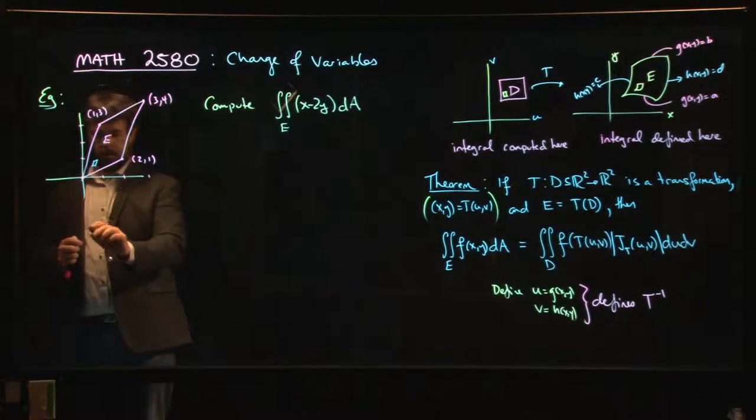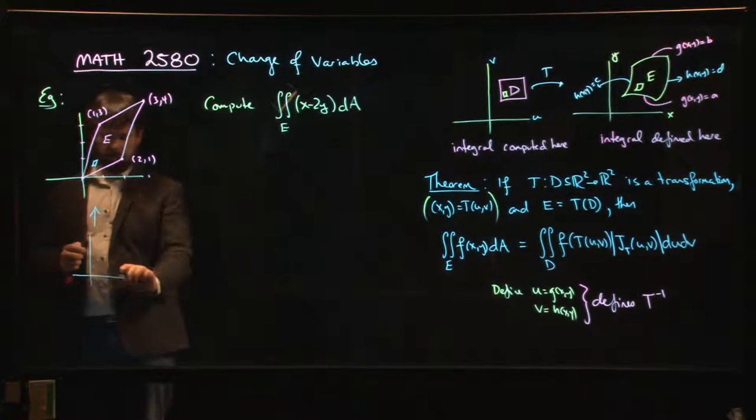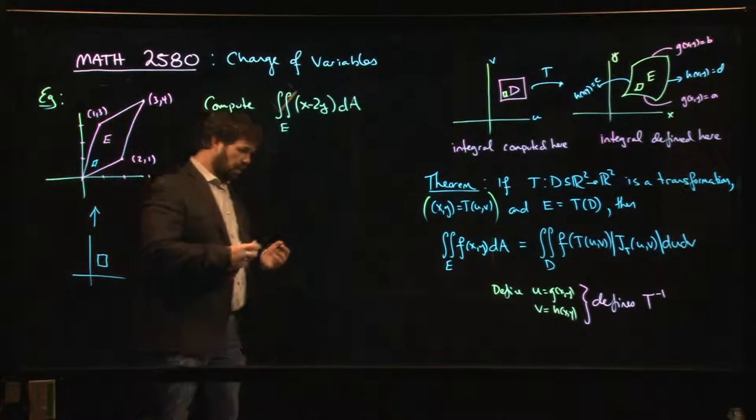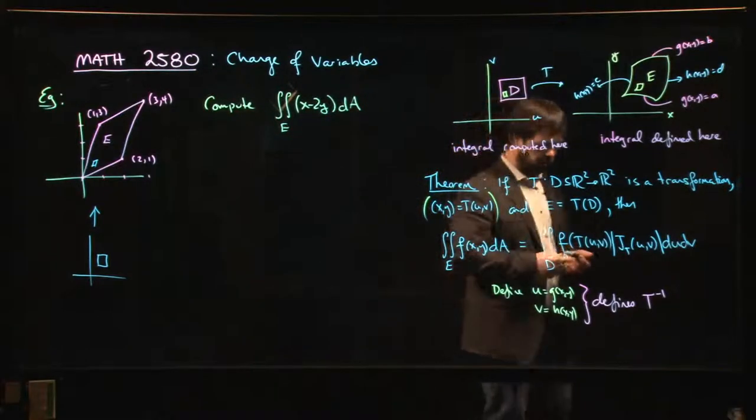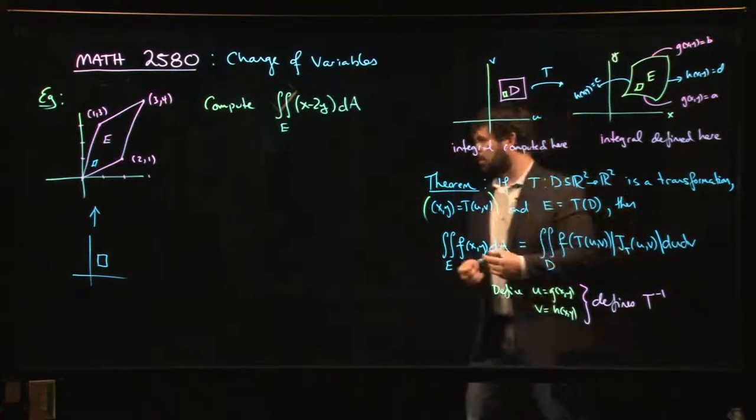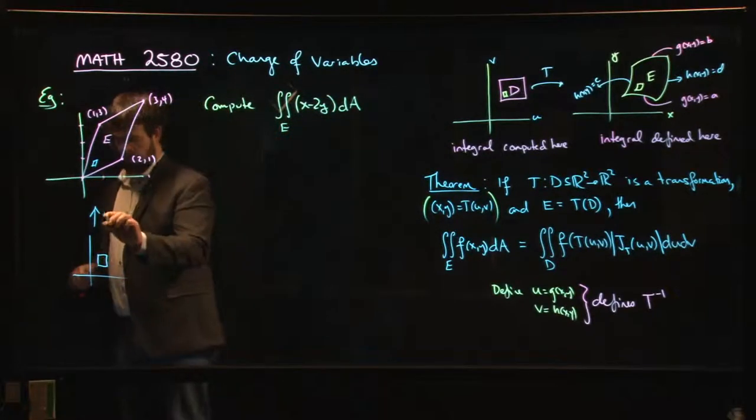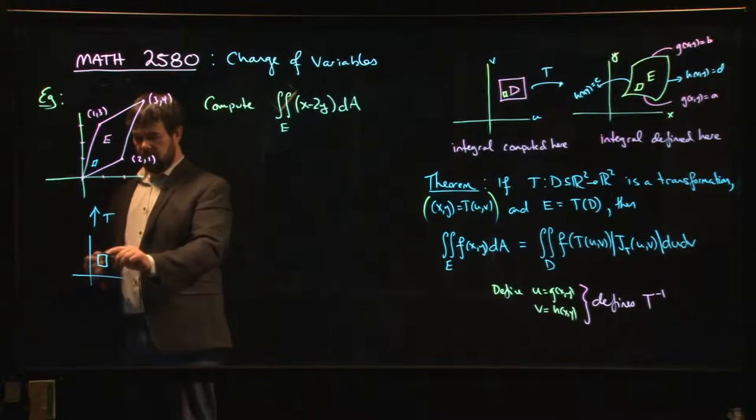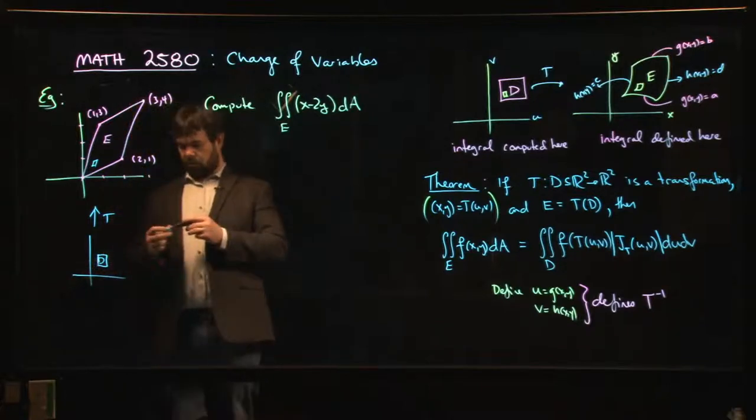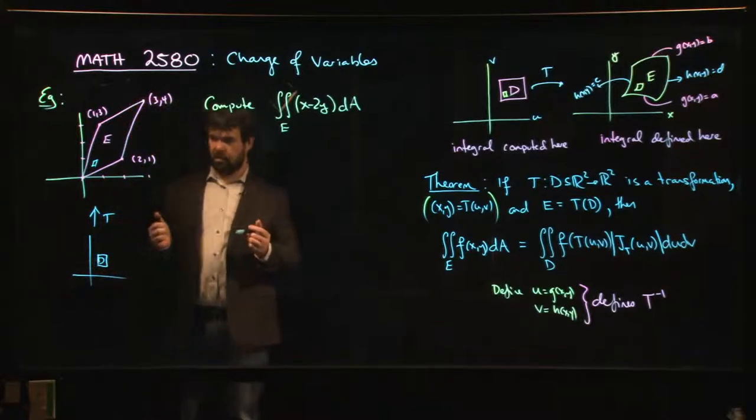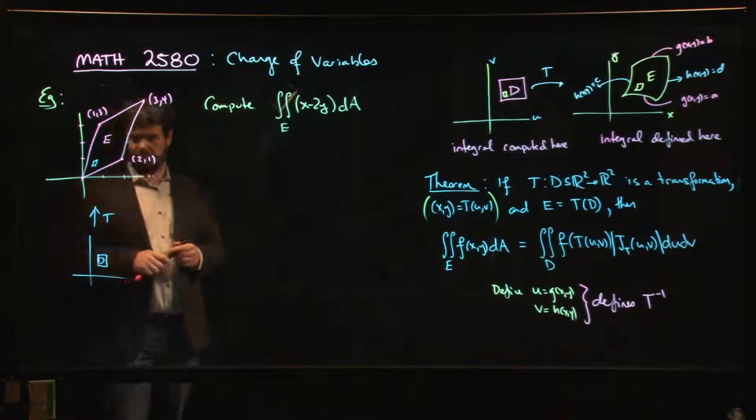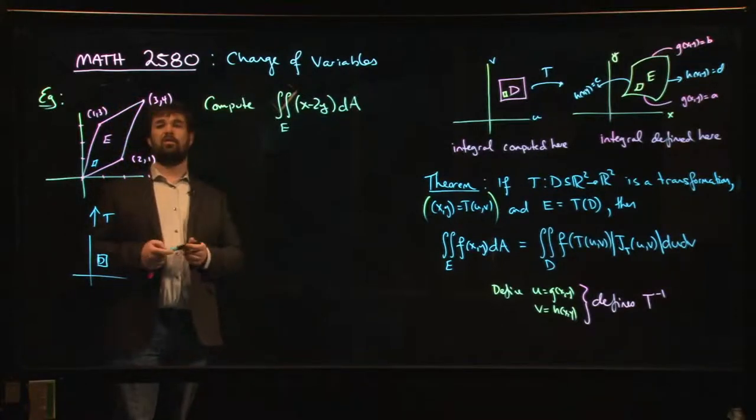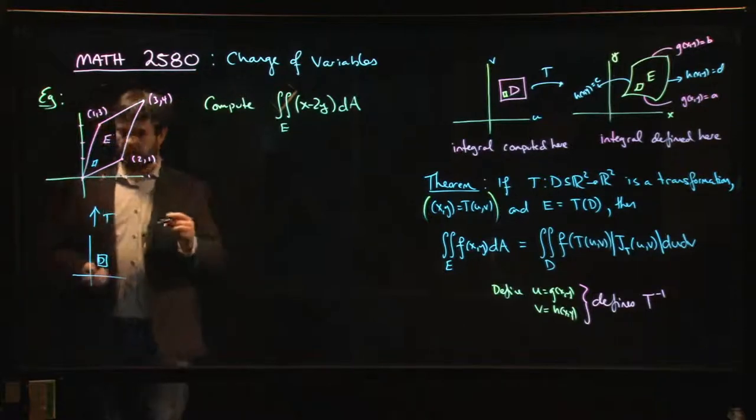So we got two things to do: we got to figure out what that rectangle should be and we got to figure out what the transformation should be. We got to come up with two things: the region D and the transformation T that gets us from here to there. One of the ways that you can do this is you start looking at the boundary and start thinking about the equations that define my boundary.